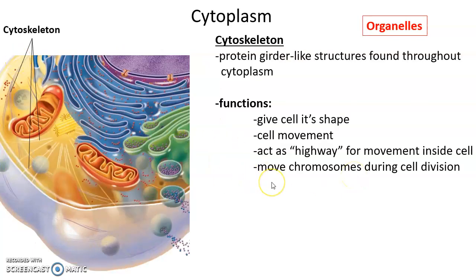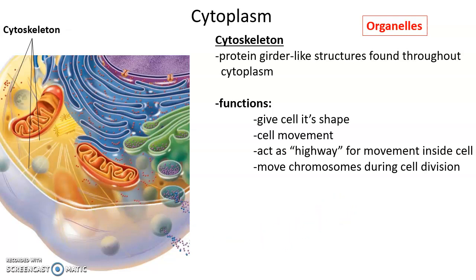The cytoskeleton is a network of long protein structures stretching throughout the cell — like girders connecting the organelles, the plasma membrane, and extending throughout the cytoplasm. Its functions include giving the cell its shape, much like our skeleton gives us our shape. The cytoskeleton can be involved in cell movement by changing the cell's shape. Internally, it acts as a highway so that structures like vesicles can move along it. During cell division, the cytoskeleton also helps move chromosomes.